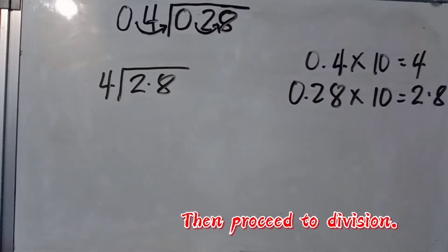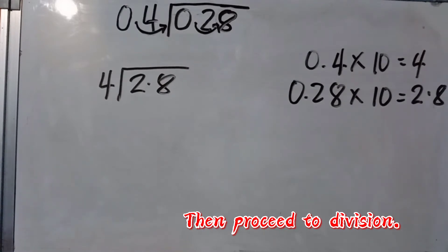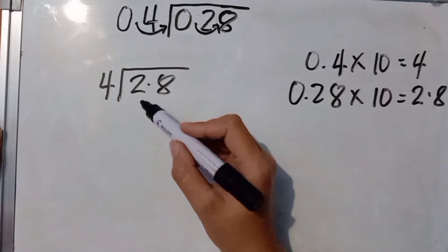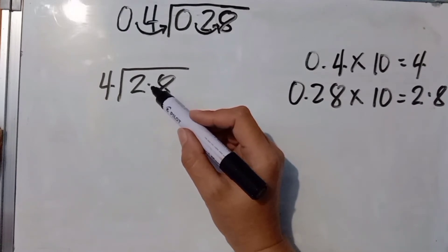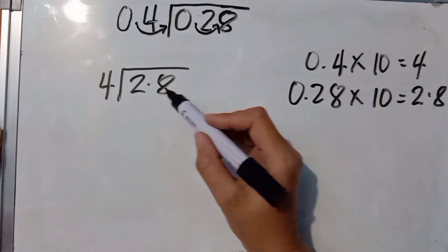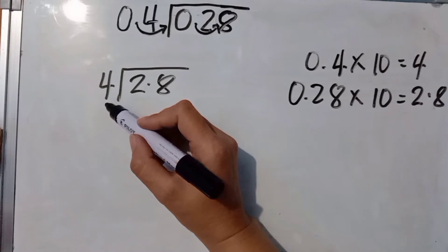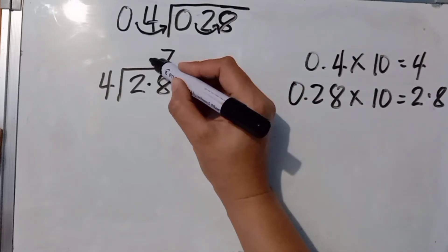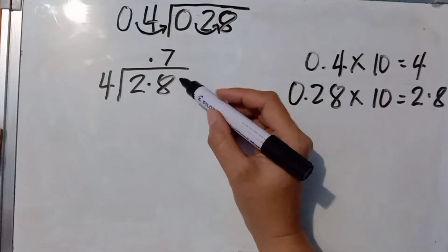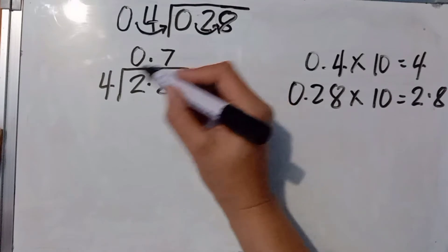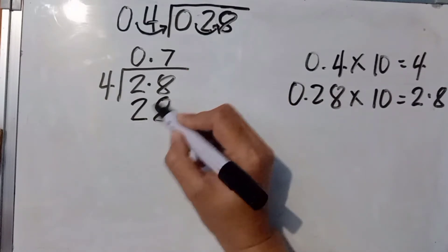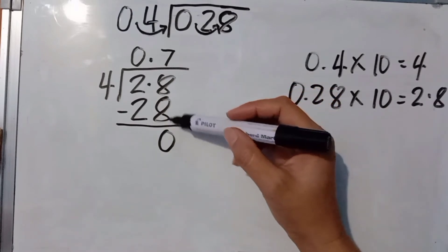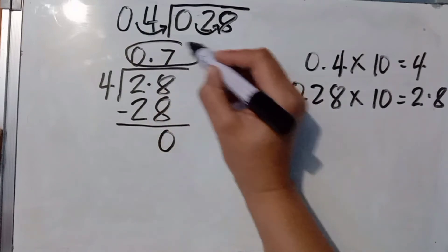Now let's proceed to division. We divide 28 by 4, ignoring the decimal point, and the answer is 7. Place 7 above the 8 and affix the decimal point, then put 0. 7 times 4 equals 28; 28 minus 28 equals 0. Since our difference is 0, our final answer — the quotient — is 7 tenths, or 0.7.